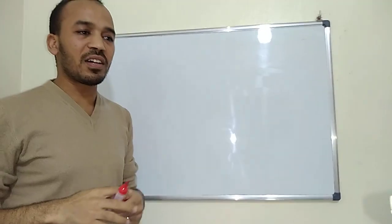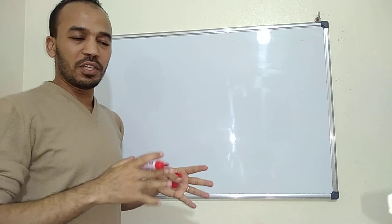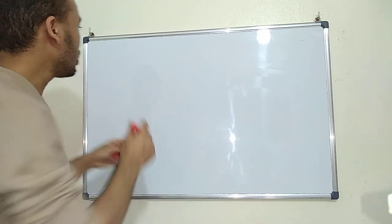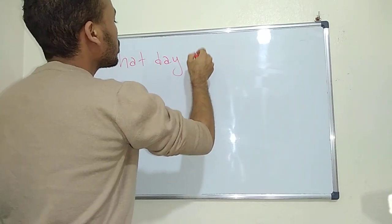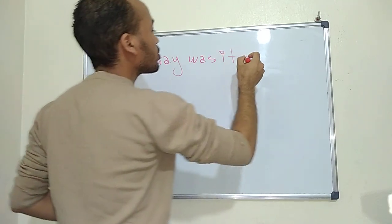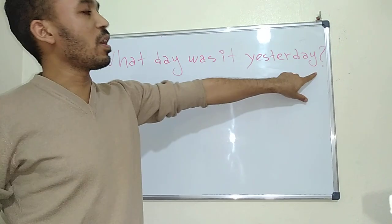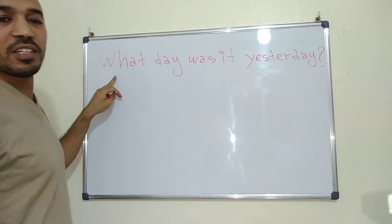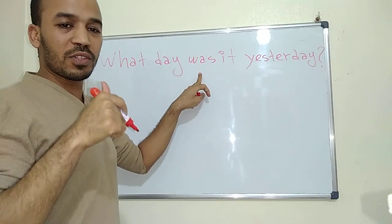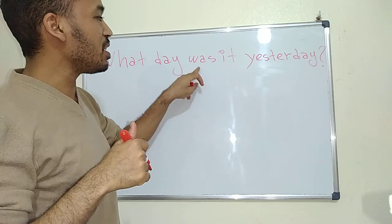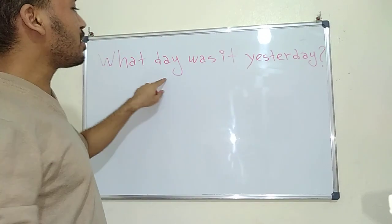So if I want to ask about yesterday, I only make the verb 'to be' conjugated in the past. The verb 'to be' in the present 'is' now becomes 'was' here, because it is conjugated in the past: 'What day was it yesterday?'